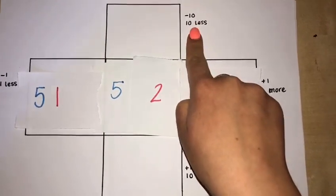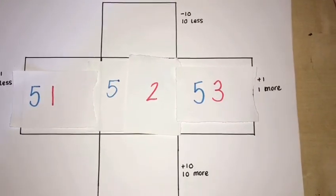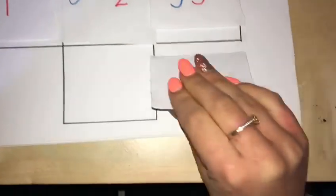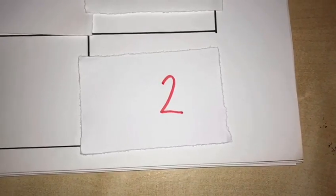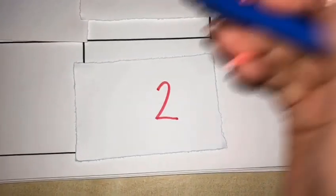This time we're going to find 10 less than 52. We know that the 2 in the ones column will not change, and 10 less than 50 is 40 by counting back in tens.